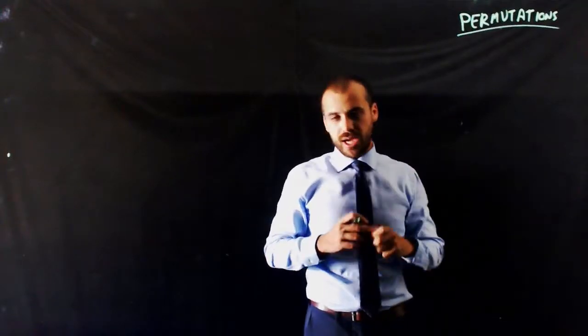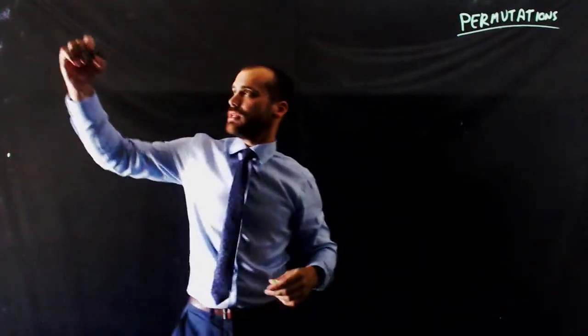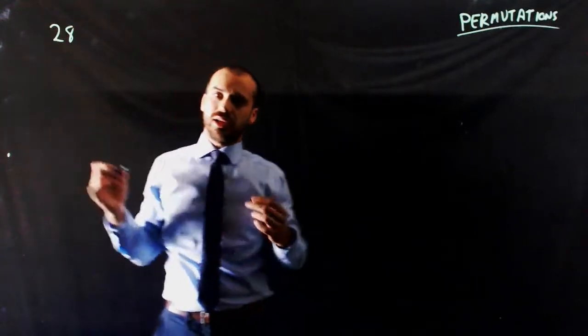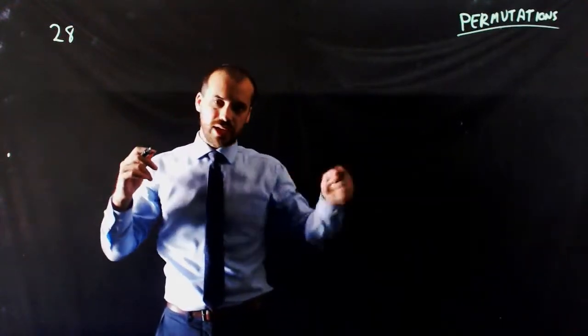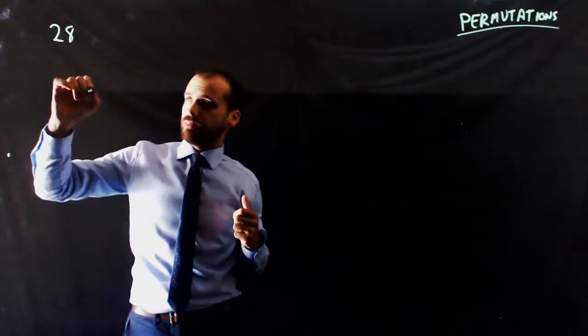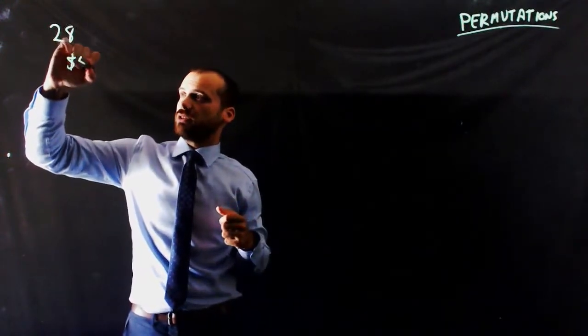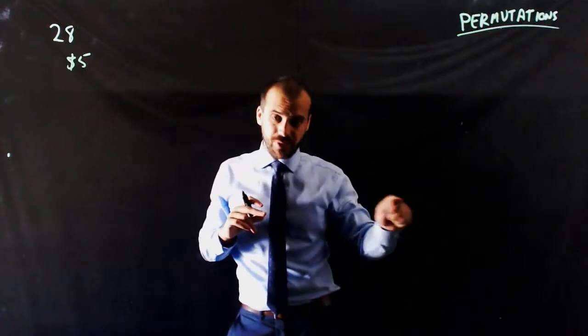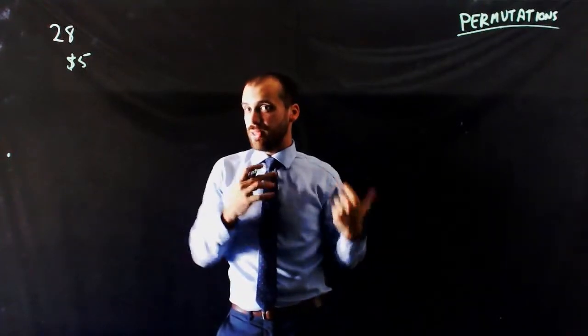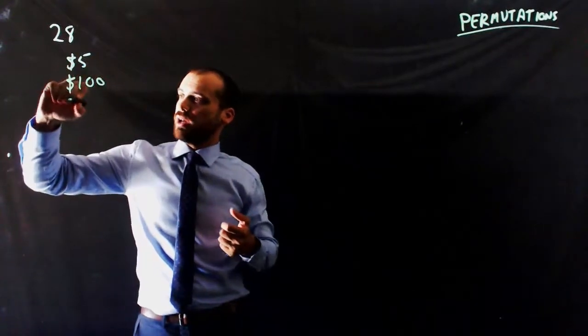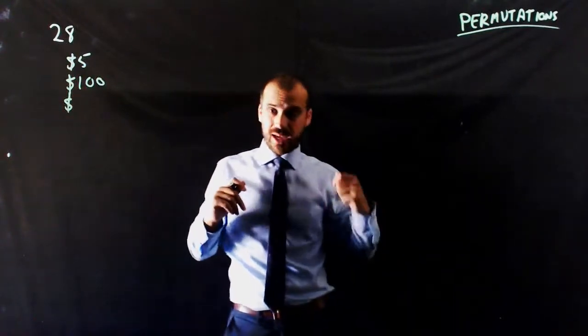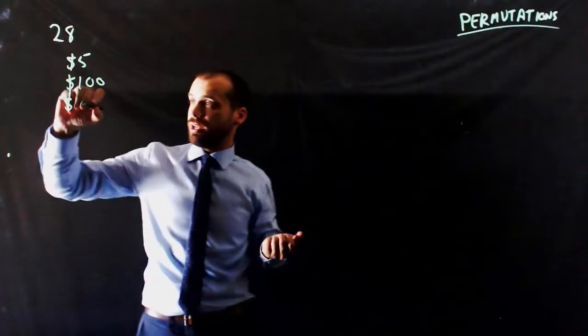Quick video here to talk about permutations. So we've got 28 students in our maths class and I'm going to give out some prizes. I'm going to pick a name out of a hat and that person is going to get $5. I'm going to pick another name out of a hat and that person is going to get $100, and I'm going to pull the last name out of the hat and that person is going to get a car.